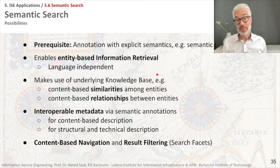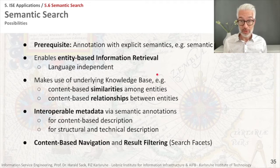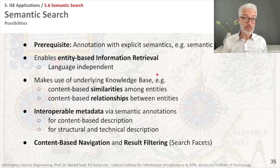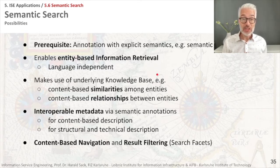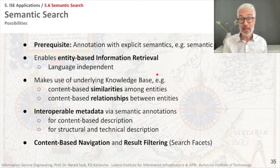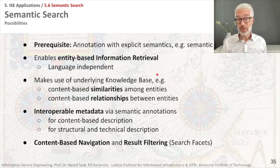You have lots of possibilities now in semantic search. One of the prerequisites is that somehow you have to get the semantics out of natural language documents or other unstructured data. This usually can be done via explicit semantic annotation — a prerequisite where you annotate or analyze your document accordingly. Semantic annotation we have already talked about in the previous lecture.